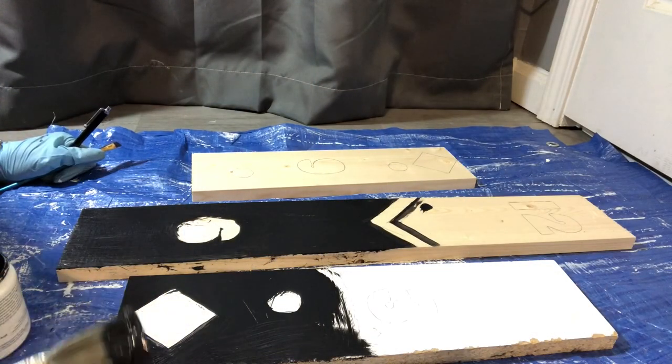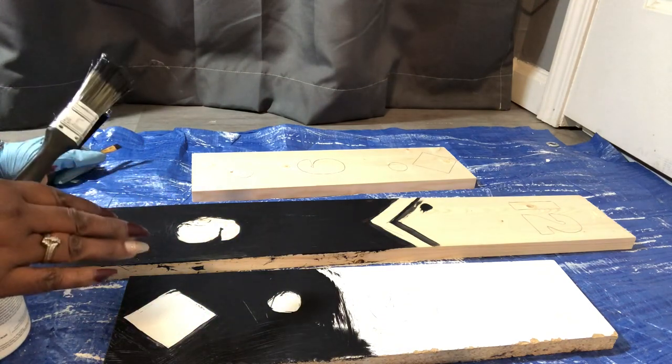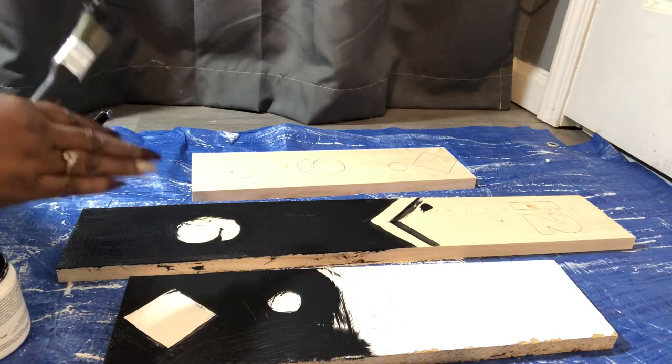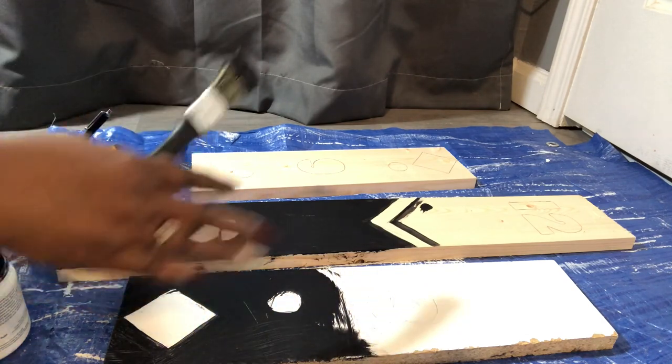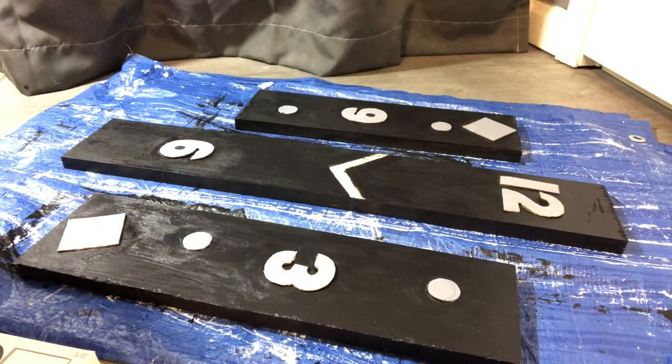I'm painting the boards black and I am painting outside of the numbers. It doesn't matter if it's perfect. I'm just trying to have a guide as to where I'm going to be placing my numbers and the other decoration that's going to be on the clock.